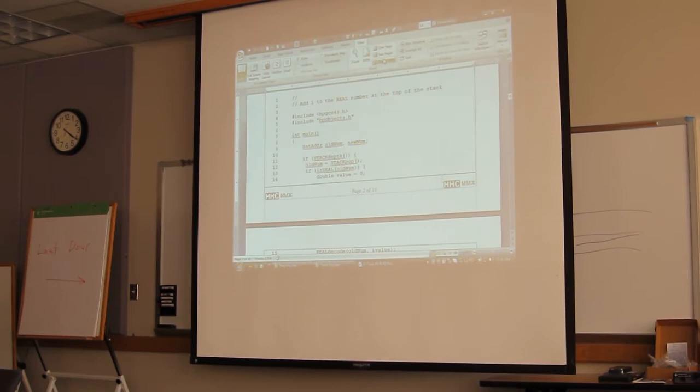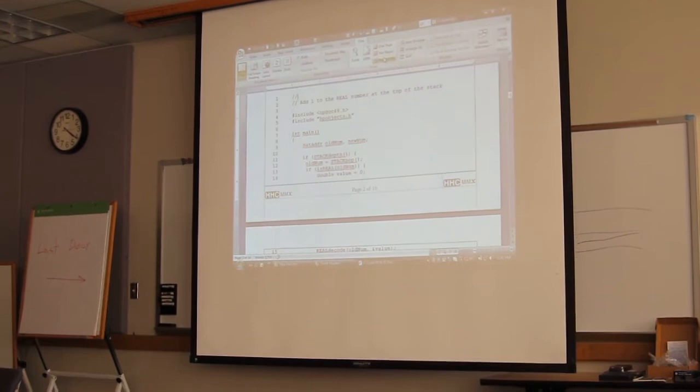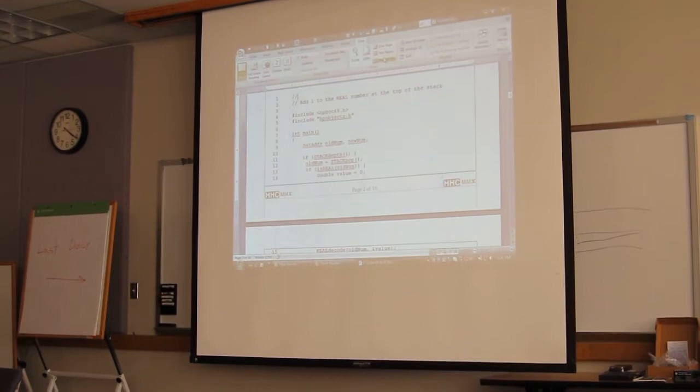So let me show you an example of how you use this. This is all C code, so hopefully some of you will understand this. At line four, you have to declare, you have to include the standard HPGCC library. That's basically something you have to, the header file. You have to include that pretty much for any program that you're writing on the calculator. The next line is the include file for the HP objects library. You'll need that if you're going to be using the library.